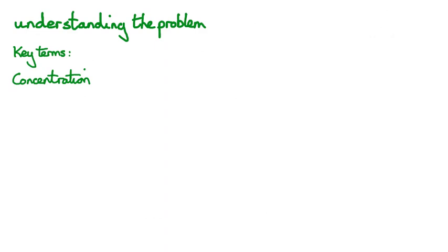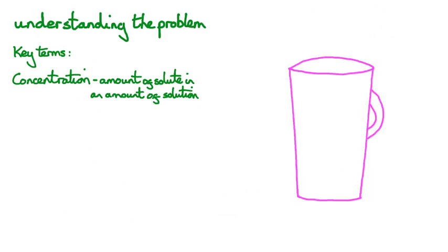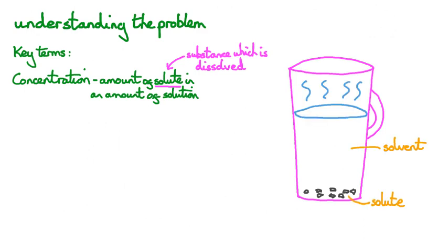The first key term to understand is concentration. Concentration is the amount of solute which is dissolved in a certain amount of solution. To understand what we mean by solute, solution, and solvent, let's look at making a cup of instant coffee. The solute is the substance which you dissolve — in this case, instant coffee. The solvent is the liquid which you dissolve your solute in — in this case, hot water. So the concentration of our cup of coffee is how much instant coffee, or solute, we've dissolved into our whole cup of coffee, which is our solution.